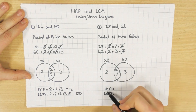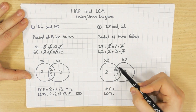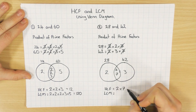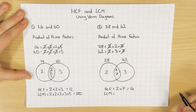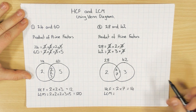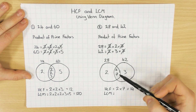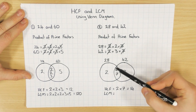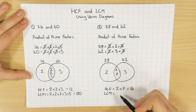So to find the highest common factor, just like before, we multiply the numbers that are in the middle: 2 × 7 = 14. So the highest common factor is 14. Just a quick note: if there's only one number in the middle, then that's just the highest common factor — you don't have to worry about multiplying it by anything.